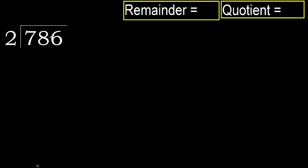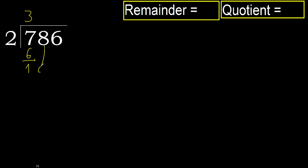786 divided by 2. 7 — 2 multiplied by which number is nearest to 7 but not greater? 2 multiplied by 4 is 8, 8 is greater. Multiply by 3: 6 is not greater, ok. Subtract: 7 minus 6 is 1. Next.